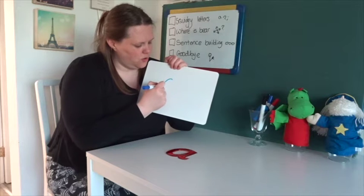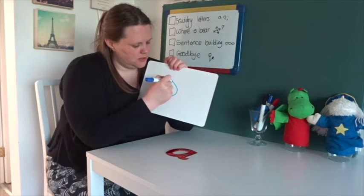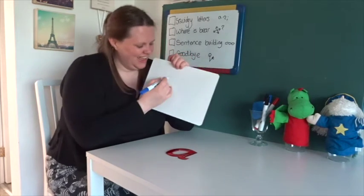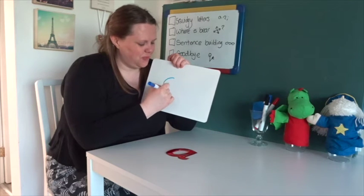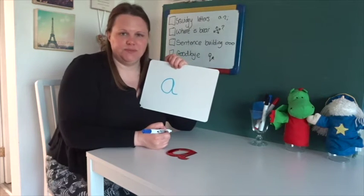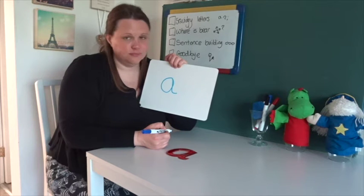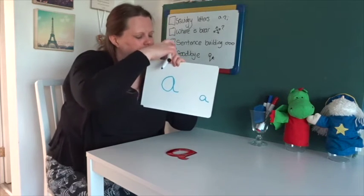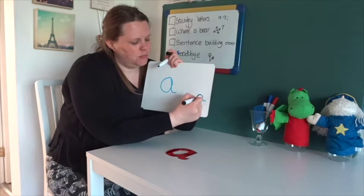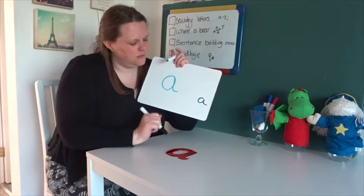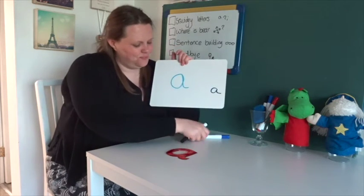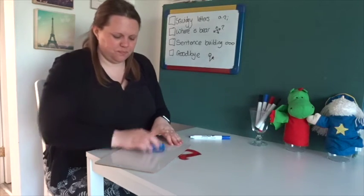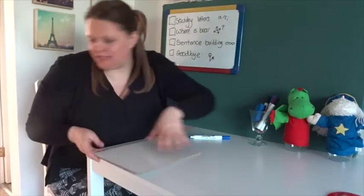Shall we have a go at writing it? I'm going to start at the top, come all the way around — that was actually a really bad letter! Start at the top, round and down and flick. If you're having somebody to help you, perhaps they could write it first and then you could go over the top.